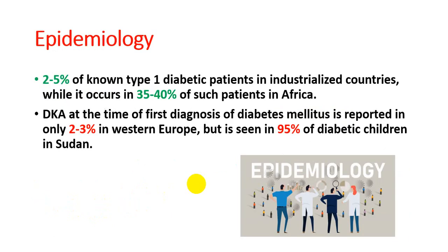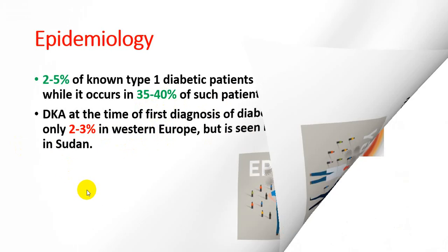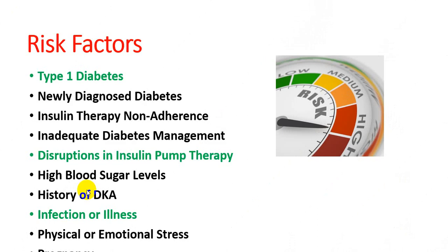Let's talk about the epidemiology of this disease. DKA accounts for 2.5% of type 1 diabetes cases in industrialized countries, but 35–40% in Africa. It also represents 23% in Western Europe, and 95% of diabetic children in Sudan are affected. This is the epidemiology briefly.